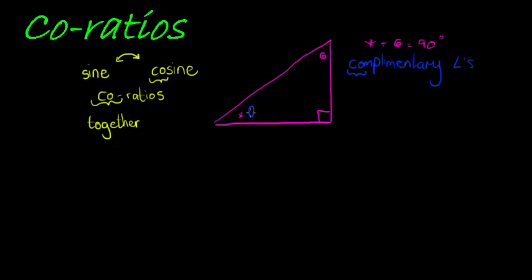So what we have is that if that is theta, then this angle there would be, because this plus that is 90, then this one must be 90 minus theta.